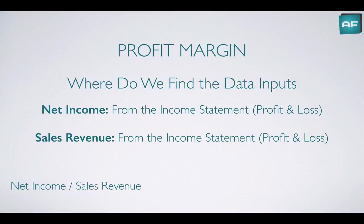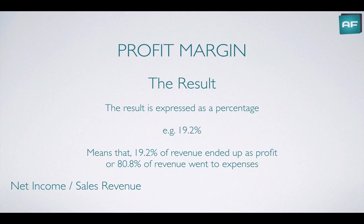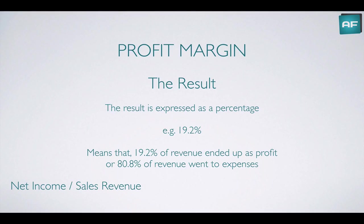The income statement is also known as a profit and loss statement. Net income is the bottom line of the income statement, and sales revenue is also known as the top line and near the top of the income statement. A profit margin result is expressed as a percentage — for example, 19.2%. A result of 19.2% would mean that 19.2% of sales revenue ended up as profit on the bottom line.